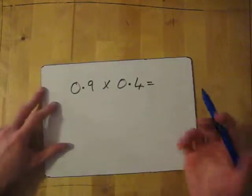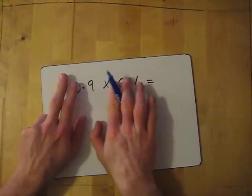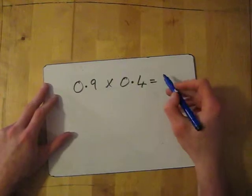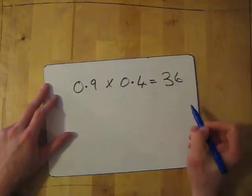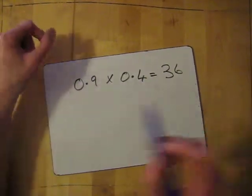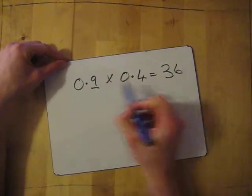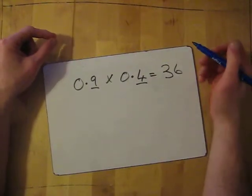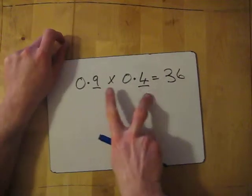So I've got another one. 0.9 times 0.4. Again, it looks tricky. Let's forget the decimals. 9 times 4. 9 times 4 is 36. Now, how many decimal places are in the whole question? I've got 1 here, 1 here, so all together in my answer, I've got 2 decimal places.